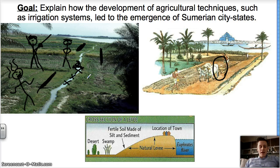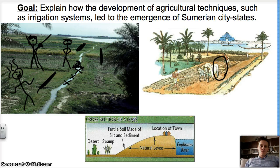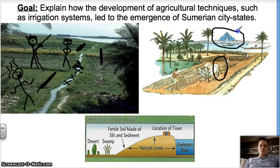I hope this has been edifying. The goal today was to explain how the development of agricultural techniques such as irrigation systems led to the emergence of Sumerian city-states. This has been Mr. McCall, World History. Take care.